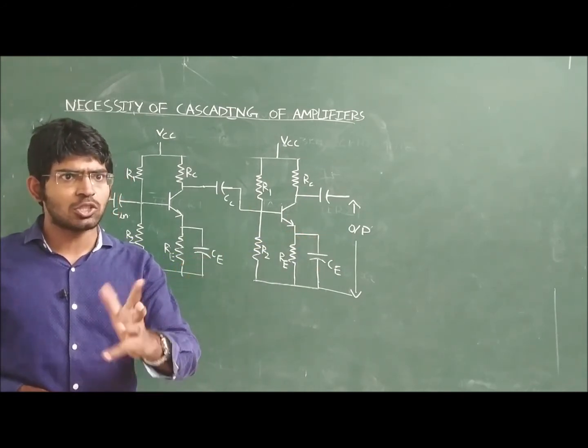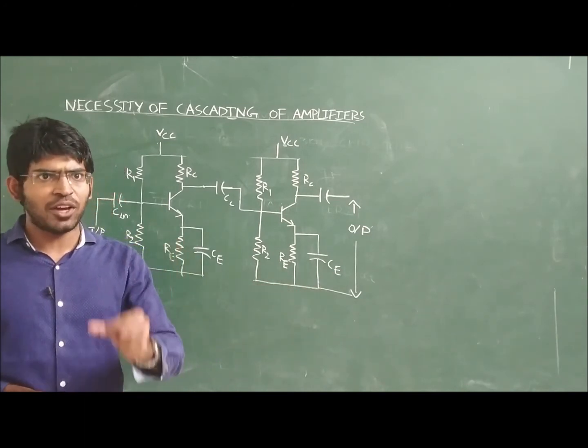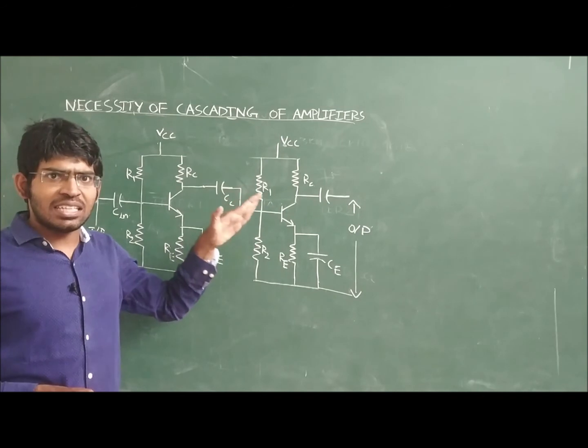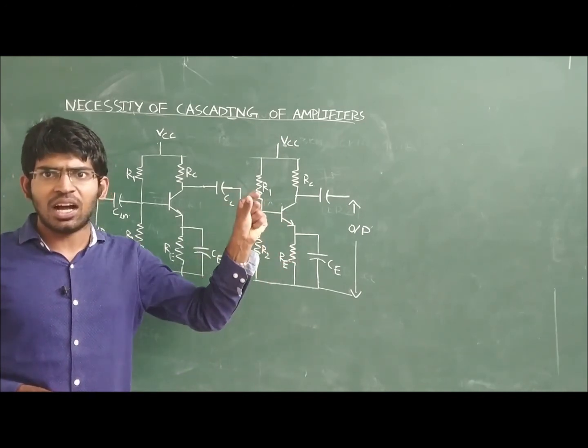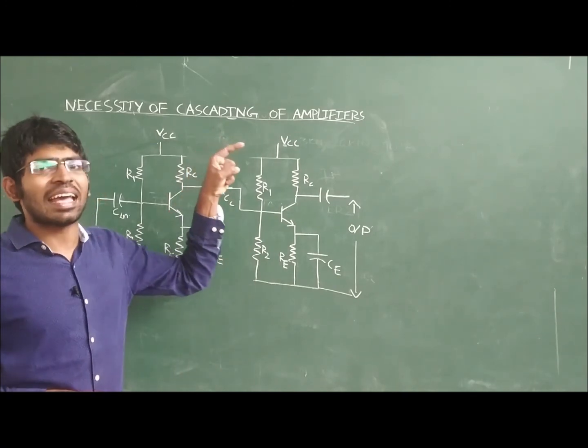Still the output of stage 2 is not sufficient, we are going for stage n. If we are satisfied with the nth stage, then these n stages must be connected in series. The connecting of these n stage amplifiers in series is called as cascading.